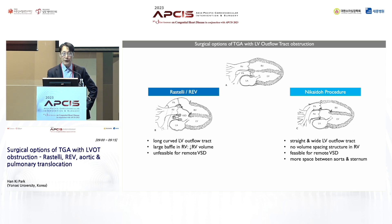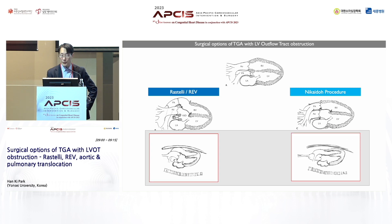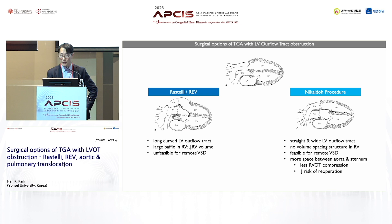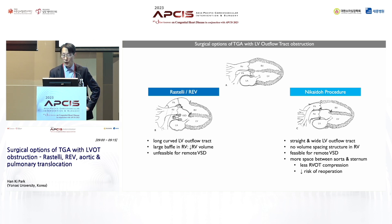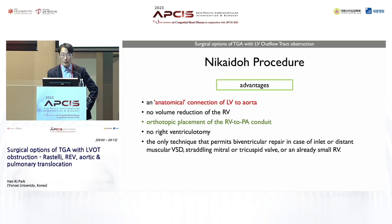This procedure is feasible even for remote VSD because we open the septum, making the VSD patch much easier compared to the Rastelli operation. Also, because we transposed the aorta posteriorly, we have more space between the ascending aorta and the sternum. This decreases the chance of RV compression by the sternum and also decreases the risk of re-operation. So the Nikaido procedure has all these advantages.